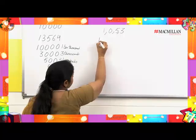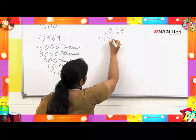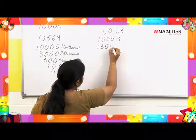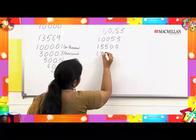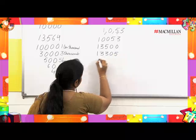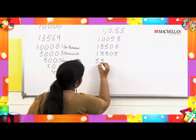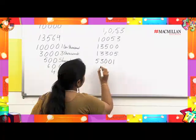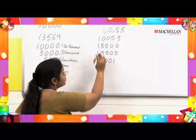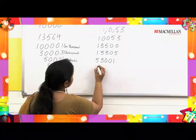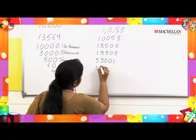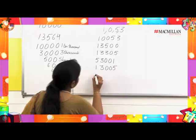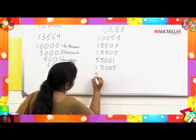Can you create some 5-digit numbers using these digits? Let us create together. I can have a number where I use 0 twice, or I can create a number with 3 twice. So the list is endless — I can create so many numbers out of it.